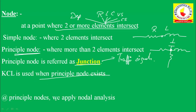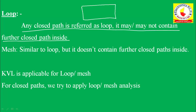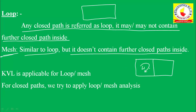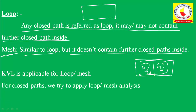What do you mean by a loop? Any closed path is a loop — it may or may not contain a further closed loop inside. A mesh is similar to a loop, but it should not contain any further closed path inside. For example, in a circuit we might have loop L1, loop L2, and loop L3. In loop analysis we consider all three loops; in mesh analysis we only use L1 and L2.